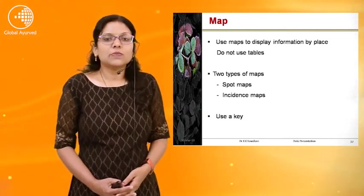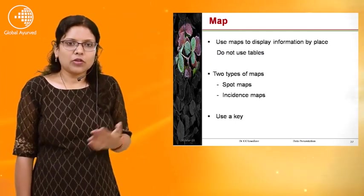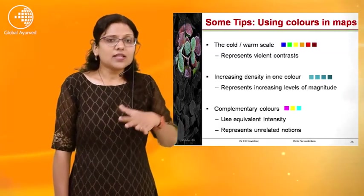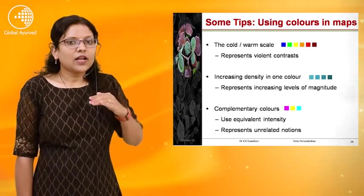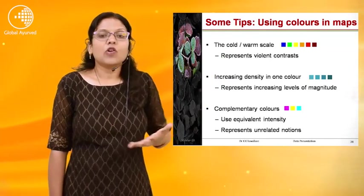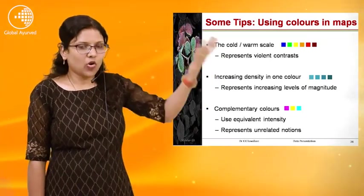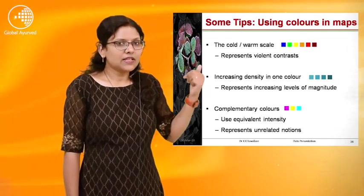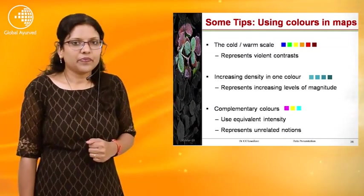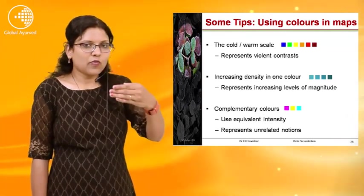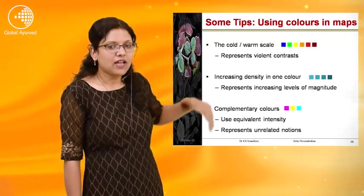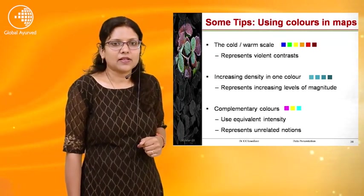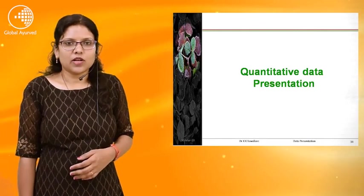The next presentation drawing method is the map. Maps are used to display information by place. There are two types: spot maps and incidence maps. We can use a key to represent the map. For contrast — cold and warm scale — or to represent increasing density, we can use increasing shades of one color. Complementary colors can show equivalent intensity. This is the example of a spot map and incidence map showing cholera attack rate and water supply in Tamil Nadu, India, 2002.